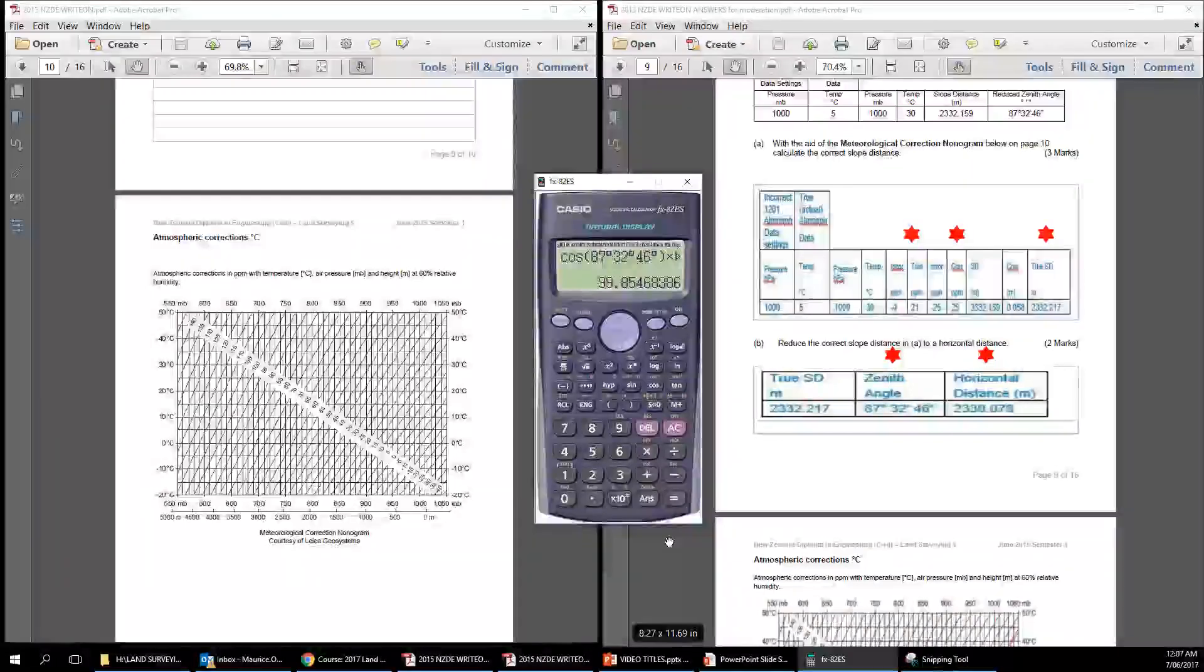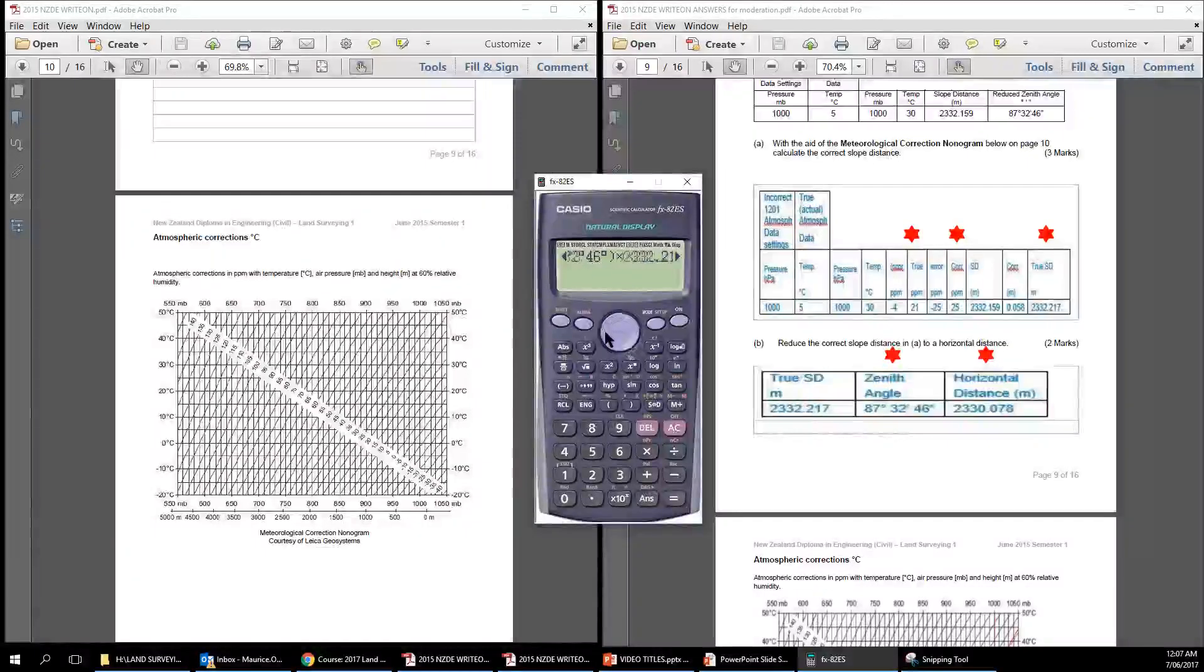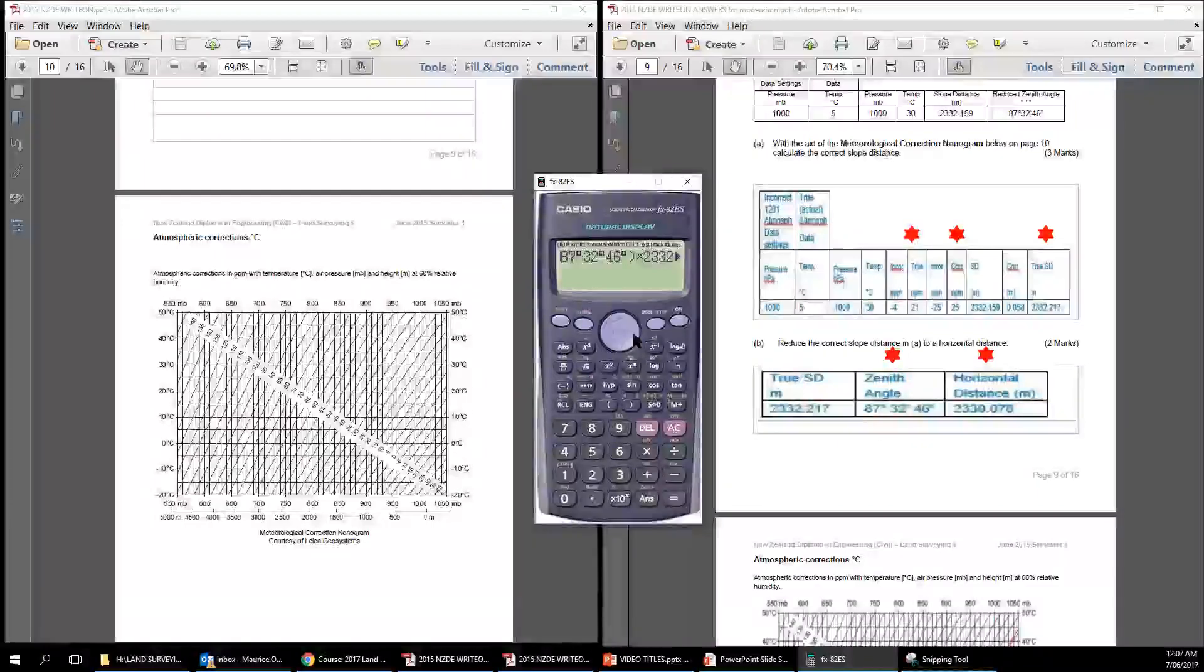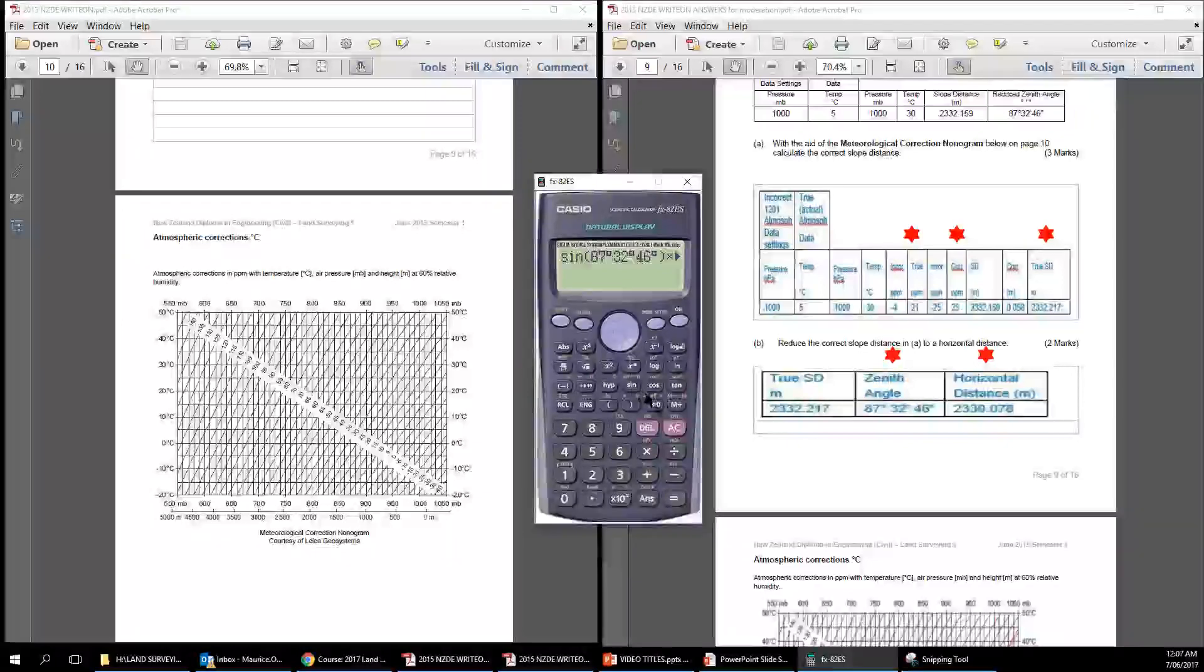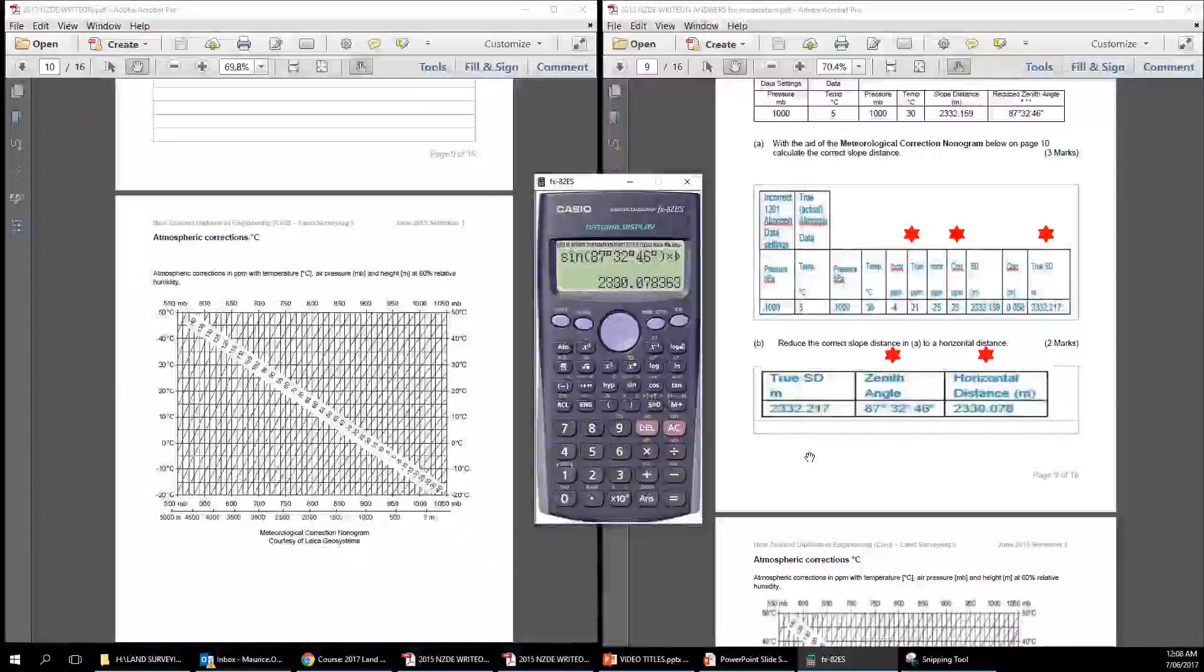And it's not cosine. It gives us 99. That's the difference in height. Okay, so clearly it must be sine. And so we can go back to here, hopefully. So I'll just go delete, just push sine. Okay, equals. 2330.078. Okay, did you see that? I thought it was the cosine, but I knew that the answer would be just a small difference there, because it's a long slope. So I put in the cosine, and I got 99. Well, that can't be the horizontal distance. So that must be the difference in height. So it mustn't be the cosine, it must be the sine.